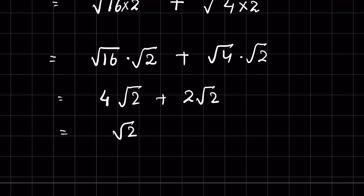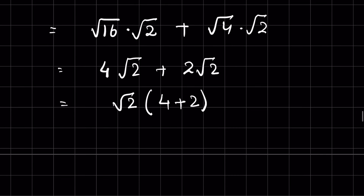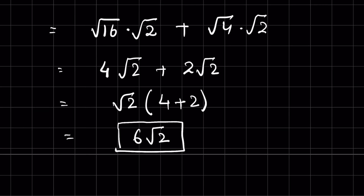Now we can take square root of 2 as common: square root of 2 times bracket 4 plus 2. 4 plus 2 is 6, so the answer is 6 times square root of 2. So this is how we simplify radicals.